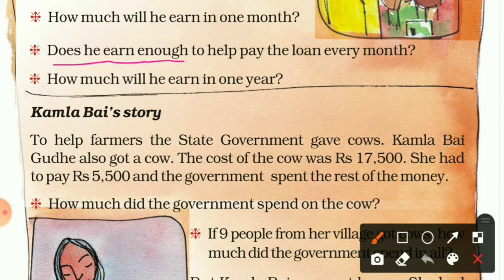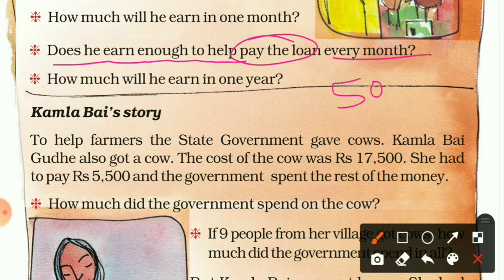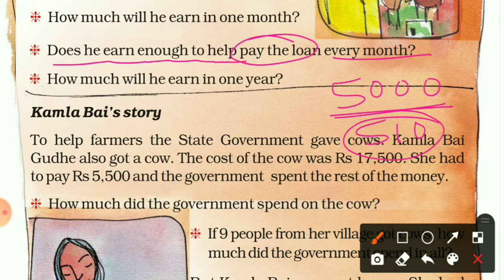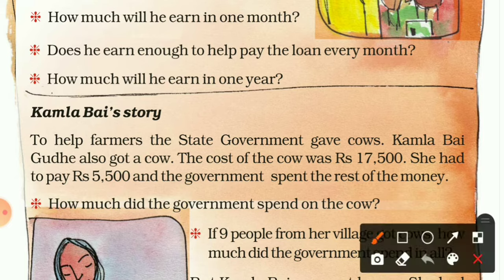Does he earn enough to help pay the loan every month? No, because the loan amount is five thousand rupees per month and he is earning only five hundred ten rupees, so he is not earning enough money for the loan. Next: how much will he earn in one year?